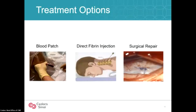Treatment options: since you're usually dealing with a leak, you can do a blood patch — injecting blood into the epidural space — though it's not permanent and sometimes doesn't work. You could also do a direct fibrin injection if the leak site is accessible. The most permanent and probably best option is surgical repair of the leak.